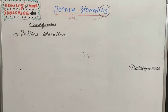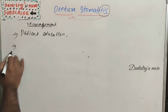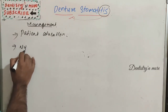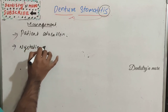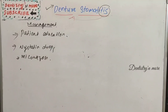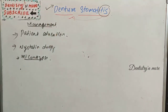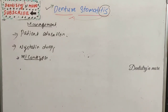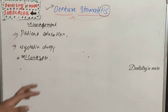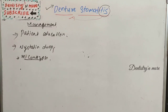If there is an antifungal issue, nystatin drops should be used. Chlorhexidine can also be used. That covers denture stomatitis — a simple but commonly asked short-note topic. We learned about management, diagnosis, classification, etiology, and predisposing factors. Hope you understood this topic — a new prosthodontics topic will be covered next. Thank you.